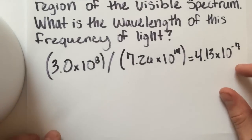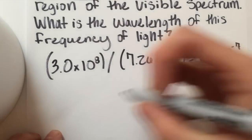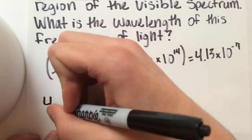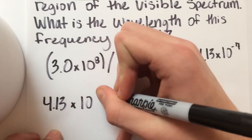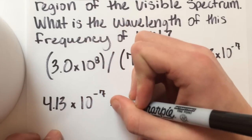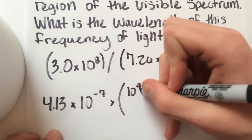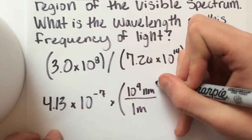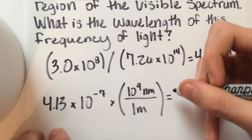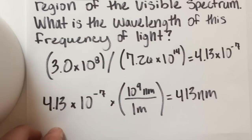So all we have to do to convert from meters to nanometers is multiply by the conversion factor. So 4.13 times 10 to the negative 7th times the conversion factor, which is 10 to the 9th nanometers over 1 meter, which will give you 413 nanometers.